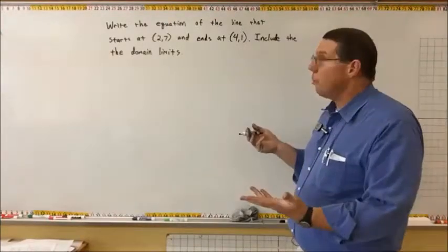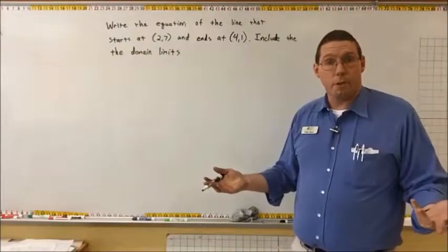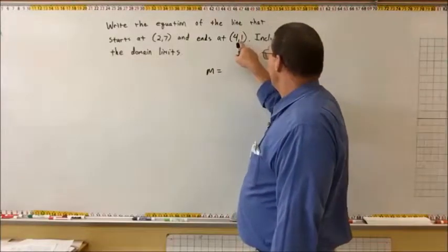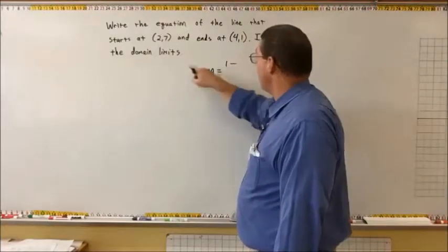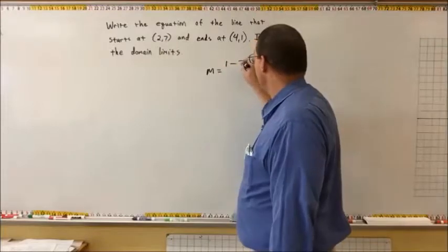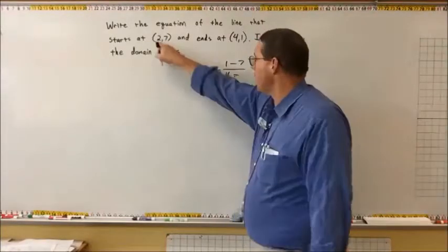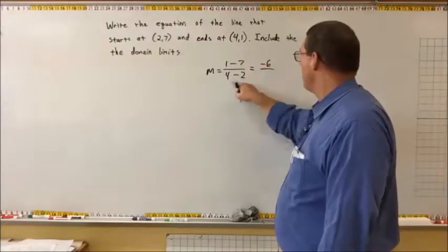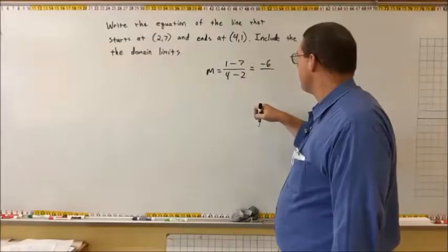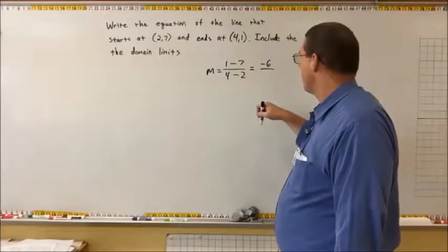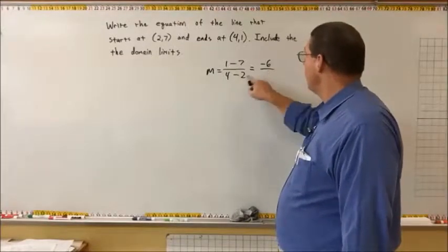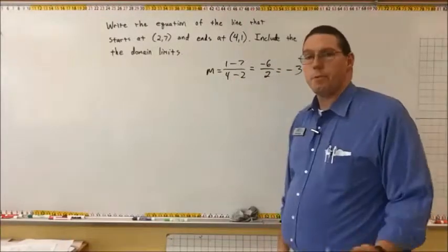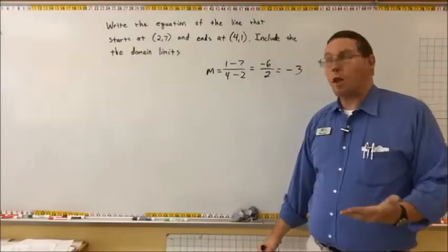We're going to write the equation of the line like we normally would. We need the slope: m equals y2 minus y1 over x2 minus x1, so that's 1 minus 7 over 4 minus 2. That gives us negative 6 over 2, which equals negative 3. So this line has a slope of negative 3.